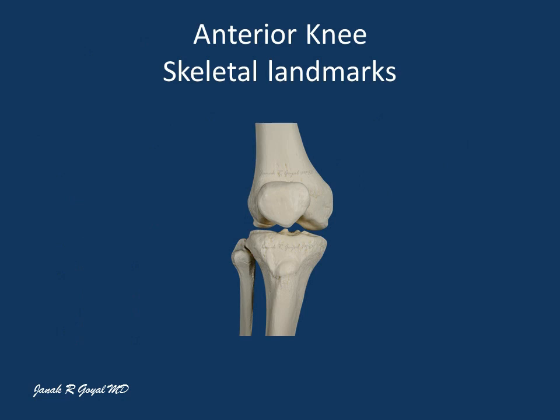The skeletal landmarks are important for proper sonographic examination of the musculoskeletal system. The knee joint consists of three articulations: the tibiofemoral, patellofemoral, and a synovial articulation between the upper end of tibia and the upper end of fibula. Let's review all important skeletal landmarks and soft tissue structures of the knee joint.